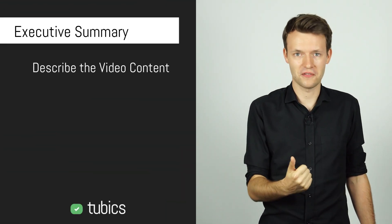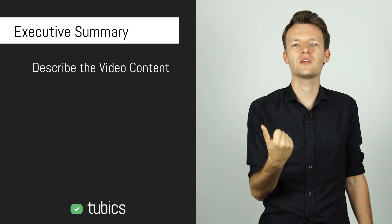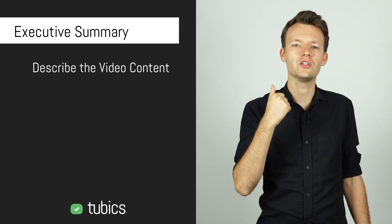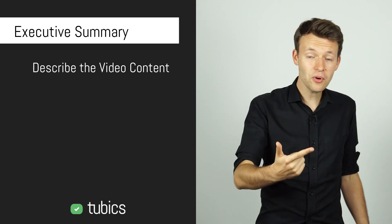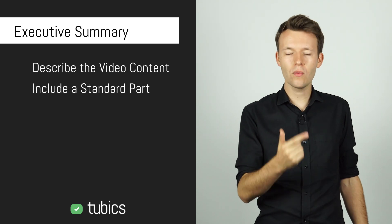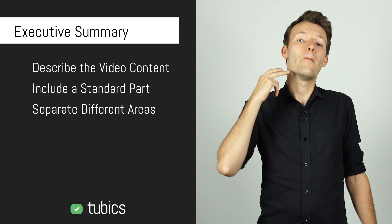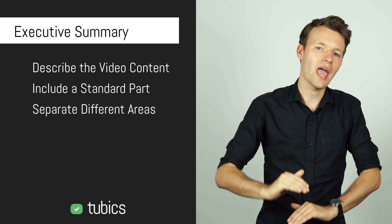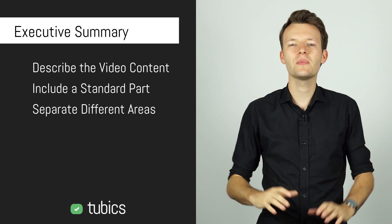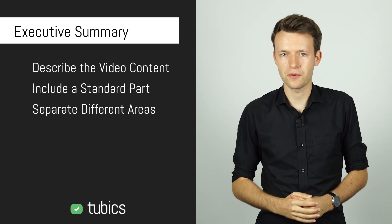So you've learned a lot about descriptions in this video. If you want to focus on the main things, here's a quick executive summary. First, write an actual description with at least 250 characters describing the video and using your focus keyword. Second, put in a part that's always the same and make it a standard template. Third, use clearly distinct areas and structure your video description.